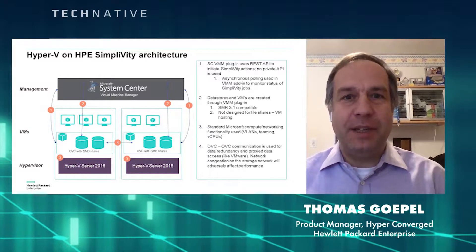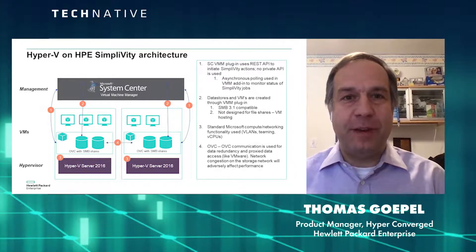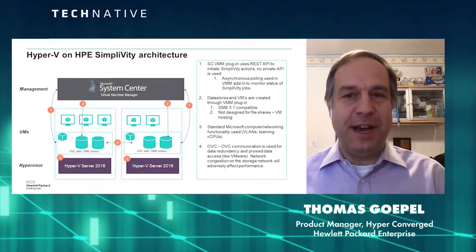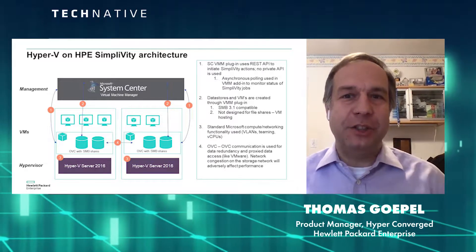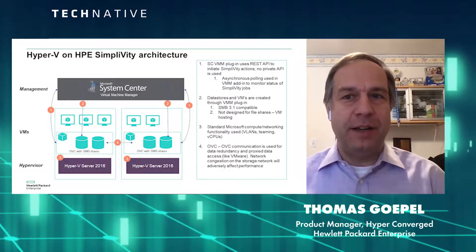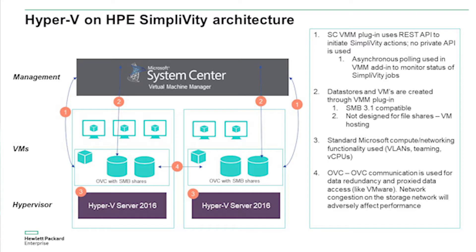Maybe a good idea is to look a little bit at the architecture that we have put behind HPE SimpliVity and Hyper-V. The way we've architected this is that our System Center Virtual Machine Manager plugin is using our standard default REST API to really work between the SimpliVity underlying file system, the Hyper-V system, and the System Center Virtual Machine Manager. We have no private, no hidden API calls being used here — we're really using a standard default integration with our public REST API.